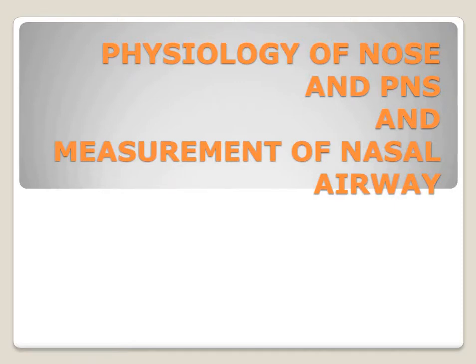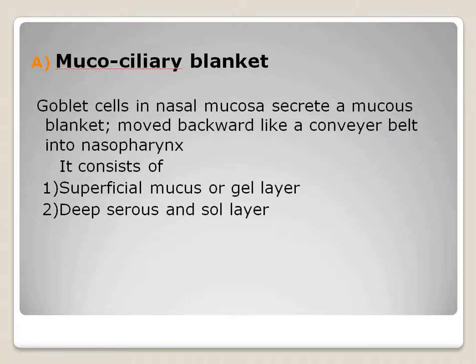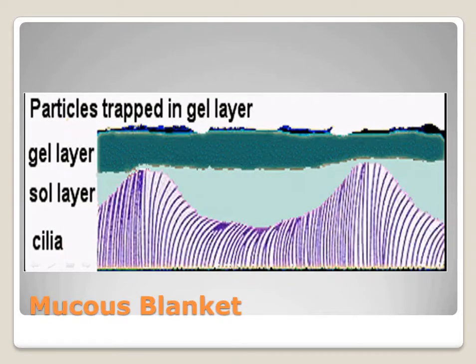Physiology of the nose and sinuses and measurement of the nasal airway. The mucus blanket: the goblet cells in the nasal mucosa secrete a mucus blanket that moves backward like a conveyor belt into the nasopharynx. It consists of the superficial mucus or gel layer and the deep serous or sol layer. Remember: above the sol layer there is a gel layer.